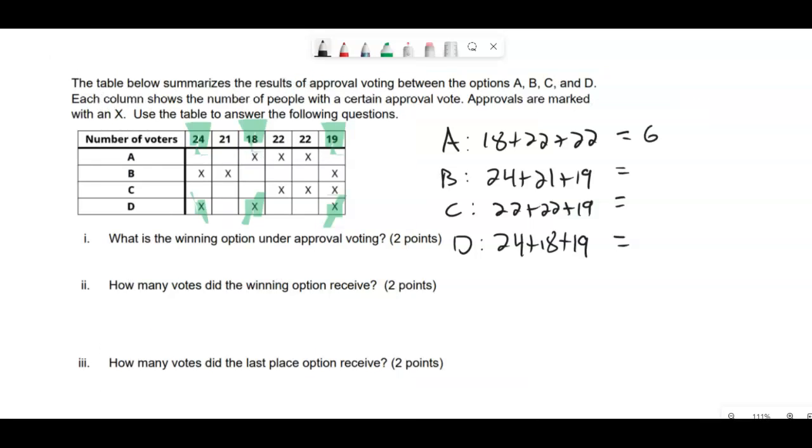So we have 62, 64, 63, and 61. What is the winning option? B.